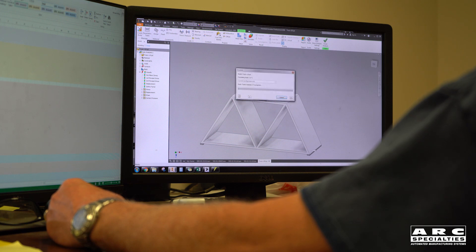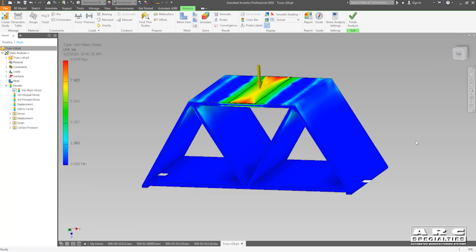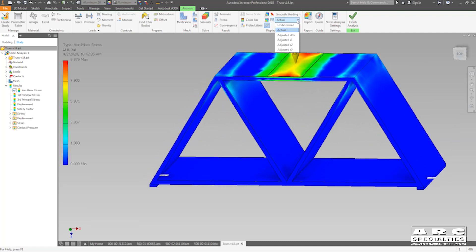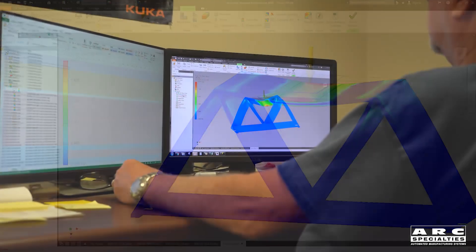According to finite element analysis, we ought to be able to support over a thousand pounds with this thing. So Mike's using the finite element analysis to apply a virtual load to a virtual part. You can tell the high stress areas by the color. He's exaggerated the distortion here.